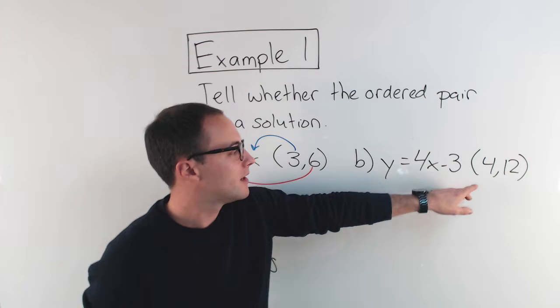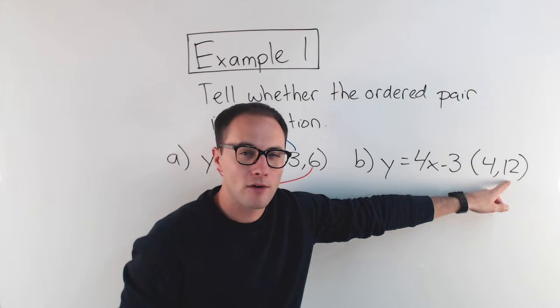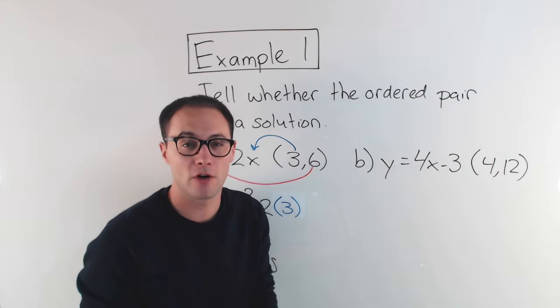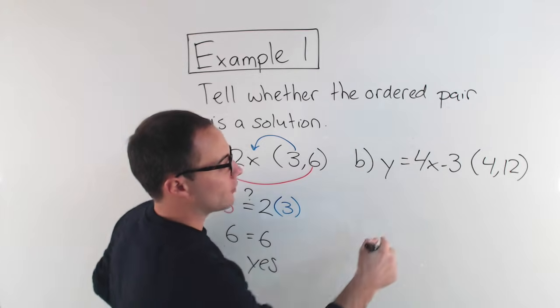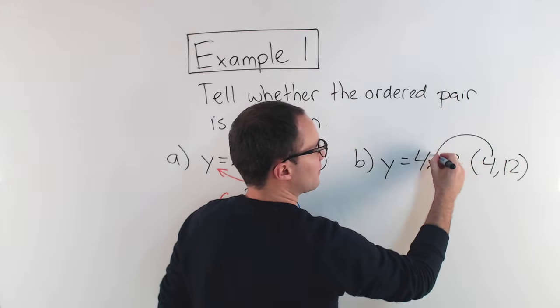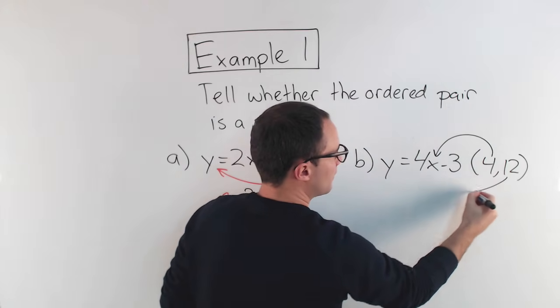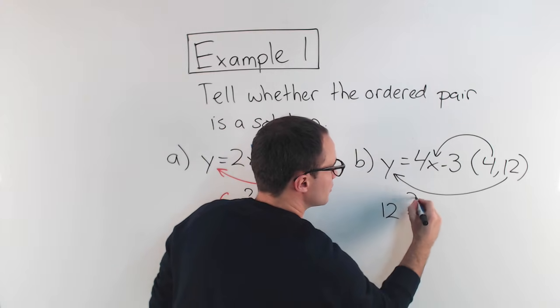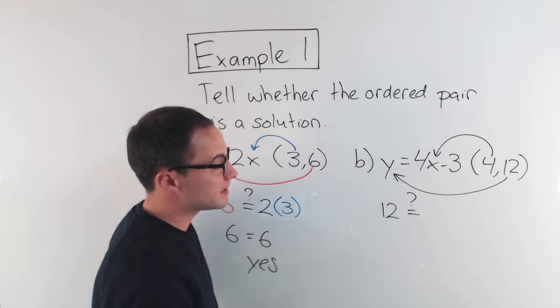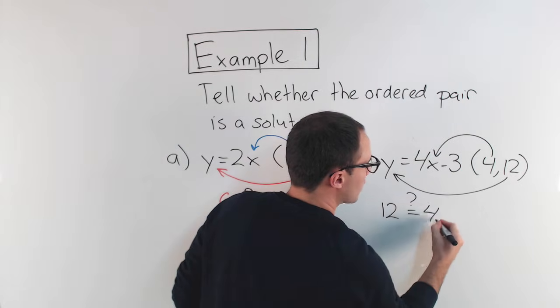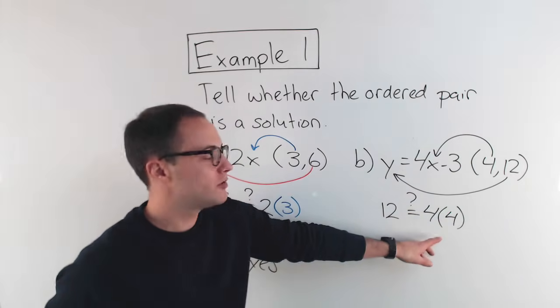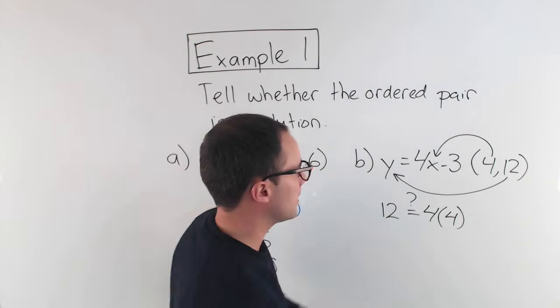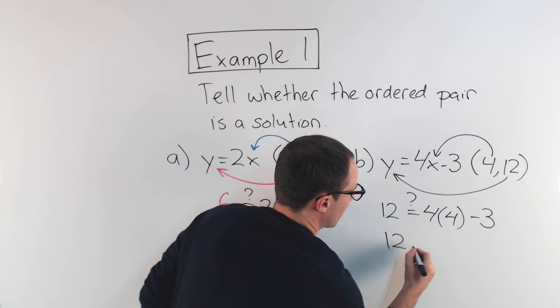y equals 4x minus 3. We're asking, is 4,12, that ordered pair, is it a solution? You can pause the video and try it on your own first. Here we go. So 4, again, I'm going to substitute that in for my x. 12, I'm going to substitute it in for my y. So I get 12 is equal to, well, that's the question. We're seeing if it is. 4 times 4, make sure you use your parentheses. If you don't have them, it's going to look like 44 minus 3.